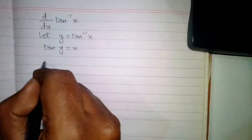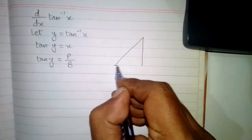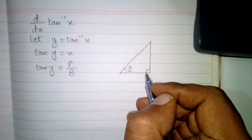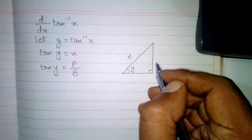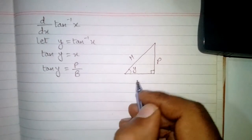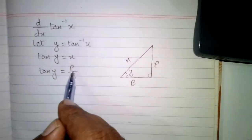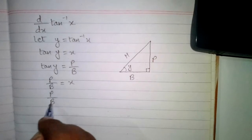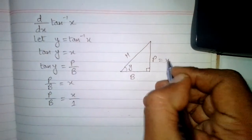We know that tan y is equal to perpendicular upon base in a right angle triangle. So we can draw a right angle triangle in which this angle is y and this angle is 90 degrees. The side opposite to 90 degrees is the hypotenuse, the side opposite to y is the perpendicular, and the side adjacent to y is the base. Since tan y equals x, and tan y equals perpendicular upon base, we can say perpendicular is equal to x and the base is equal to 1.